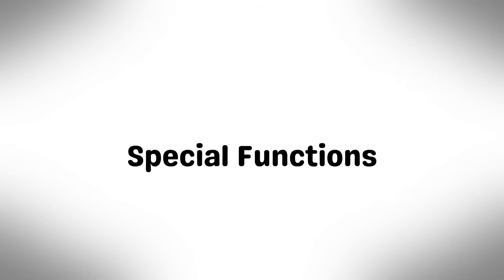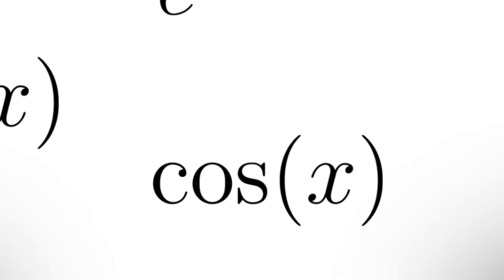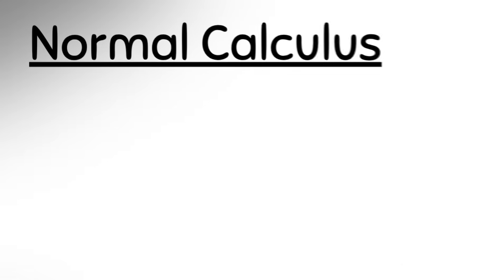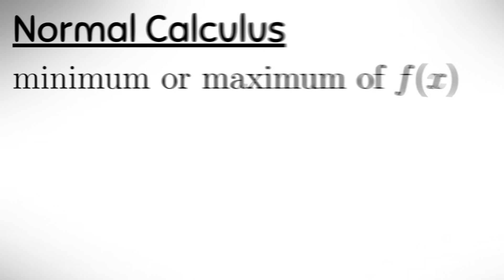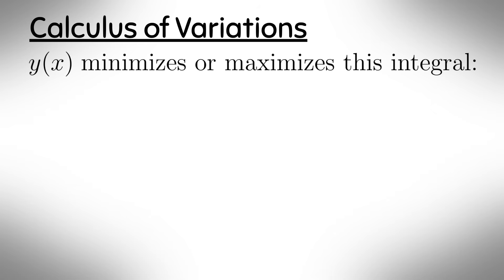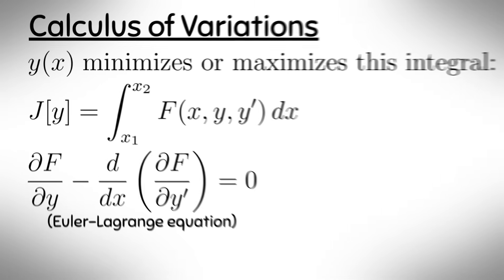Special functions are certain well studied functions that appear frequently across many areas of maths, physics and engineering. Often as solutions to important differential equations or integrals, so for example you can have e to the x, ln x, sin x, cos x, tan x, or the gamma function and so on. Calculus of variations is a branch of maths that deals with finding a function that makes a certain quantity like an integral as big or as small as possible. For example, in normal calculus to find a minimum or a maximum of f of x, you would just find where f prime of x equals 0. But in the calculus of variations, you form the function y of x that minimizes or maximizes this integral, where L is the Lagrangian. The function y of x that makes J of y stationary must satisfy this equation.